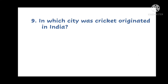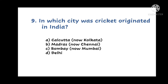Question number 9. In which city was cricket originated in India? A. Calcutta, which is now known as Kolkata. B. Madras, now known as Chennai. C. Bombay, now known as Mumbai. Or D. In which Indian city was cricket originated?